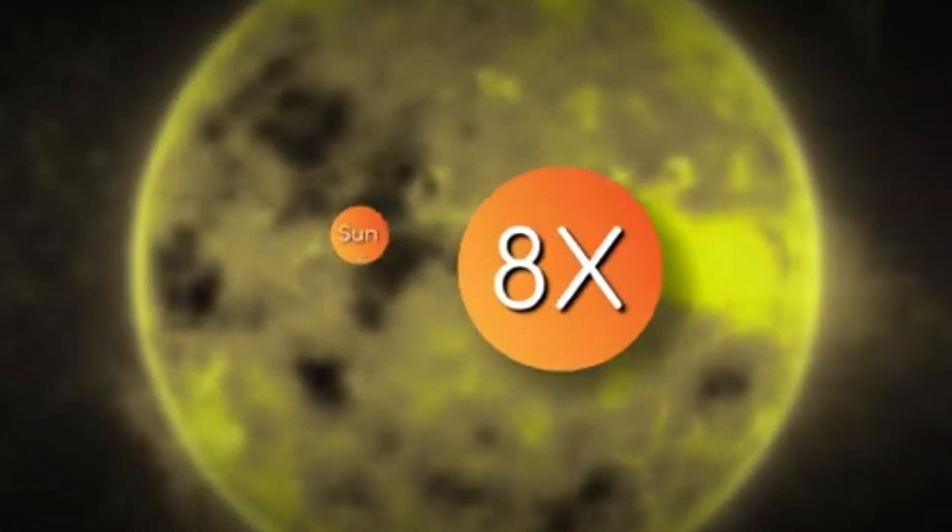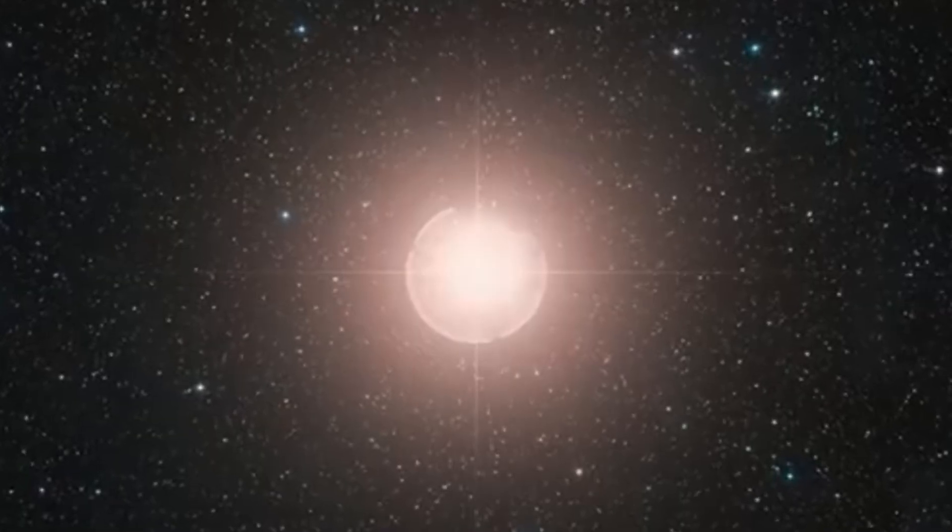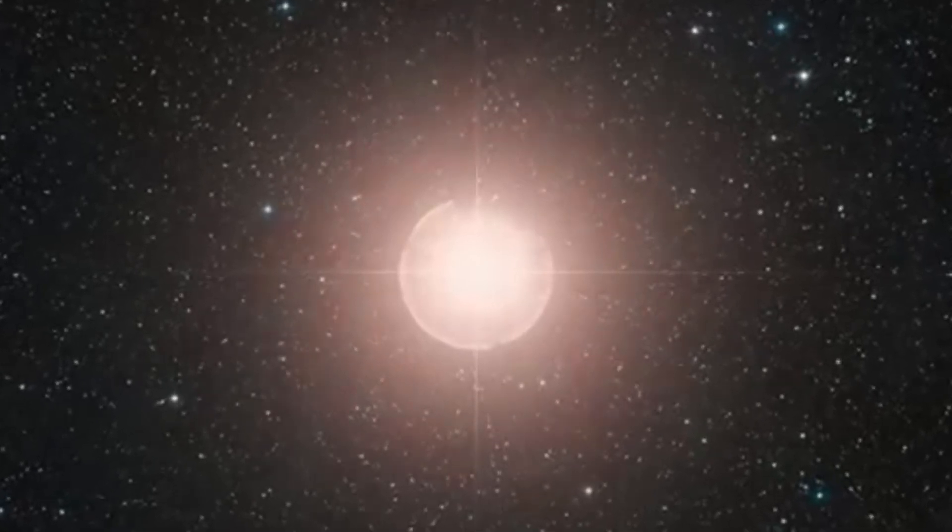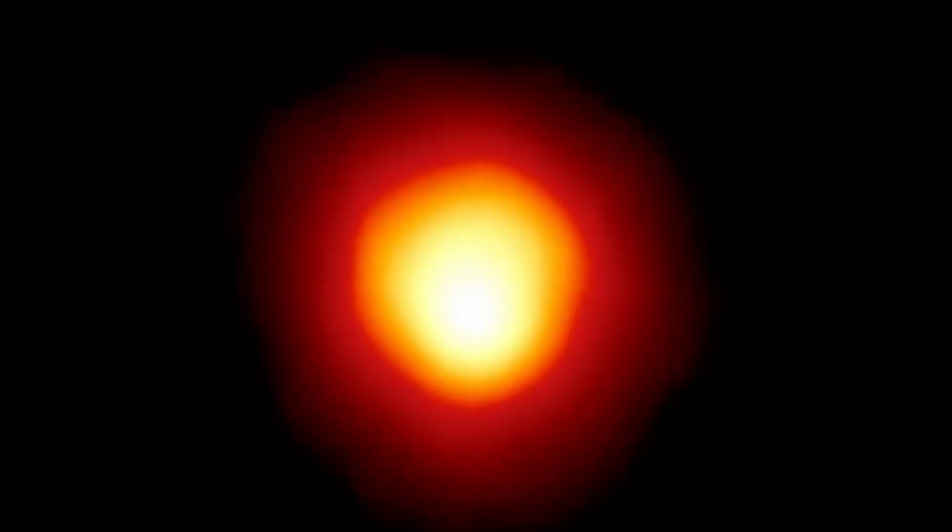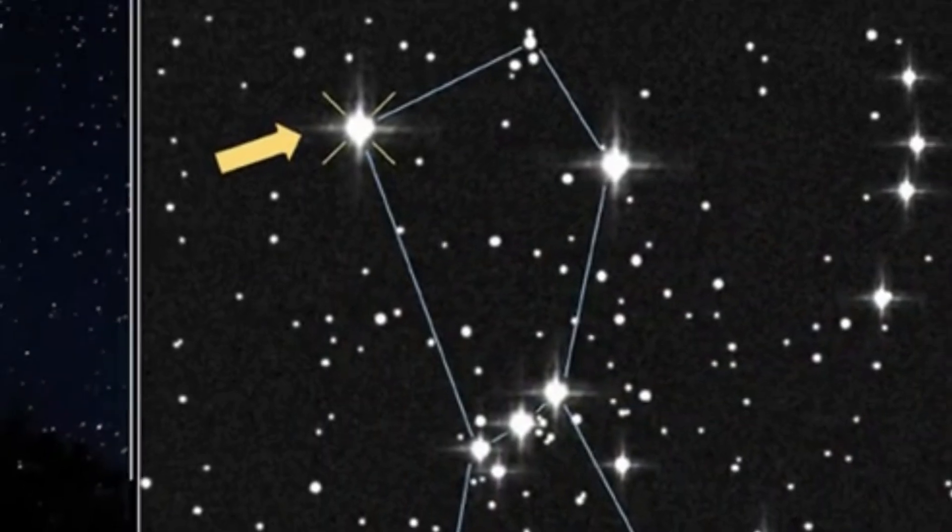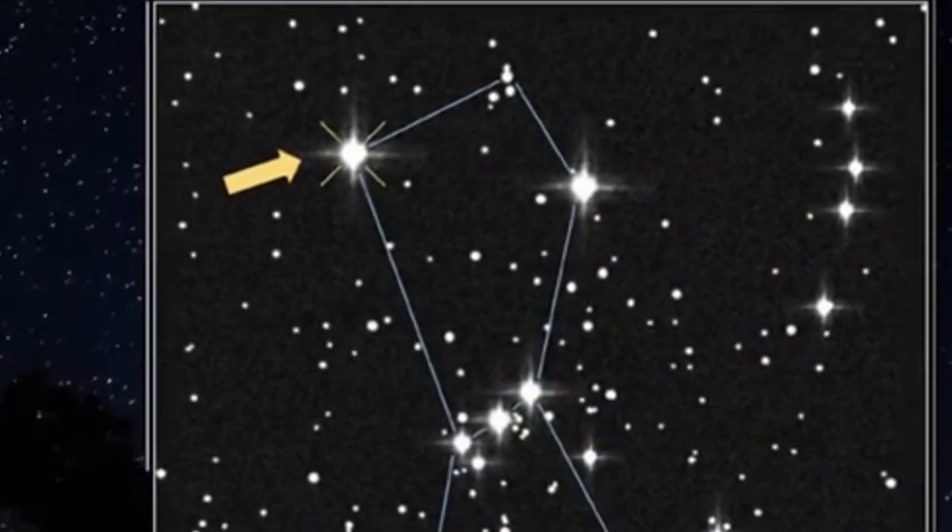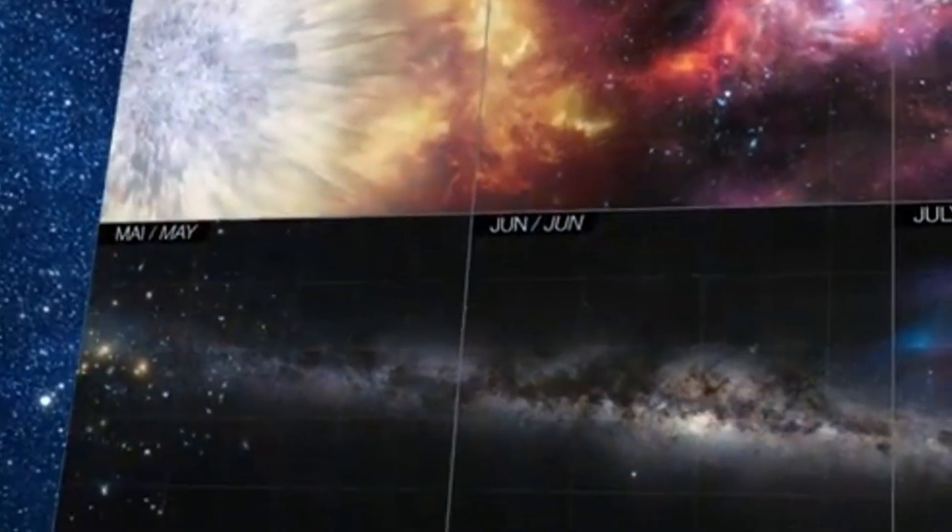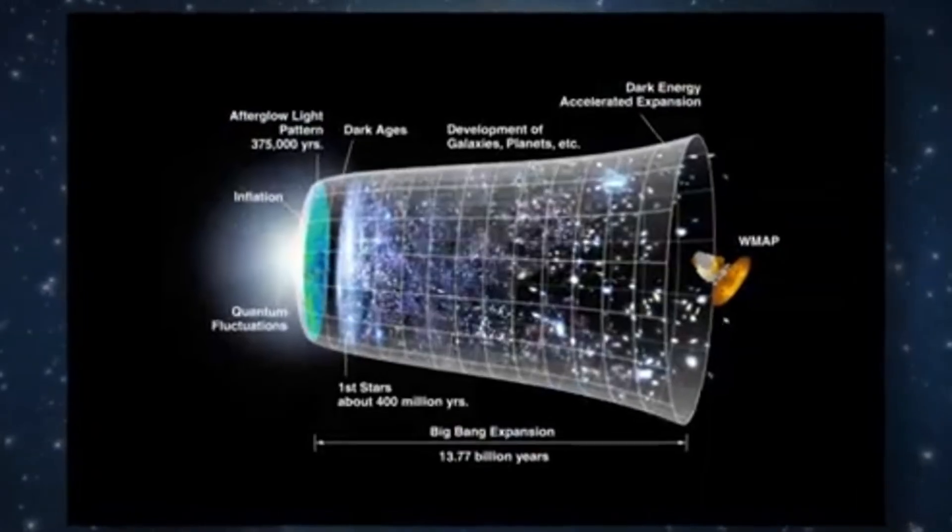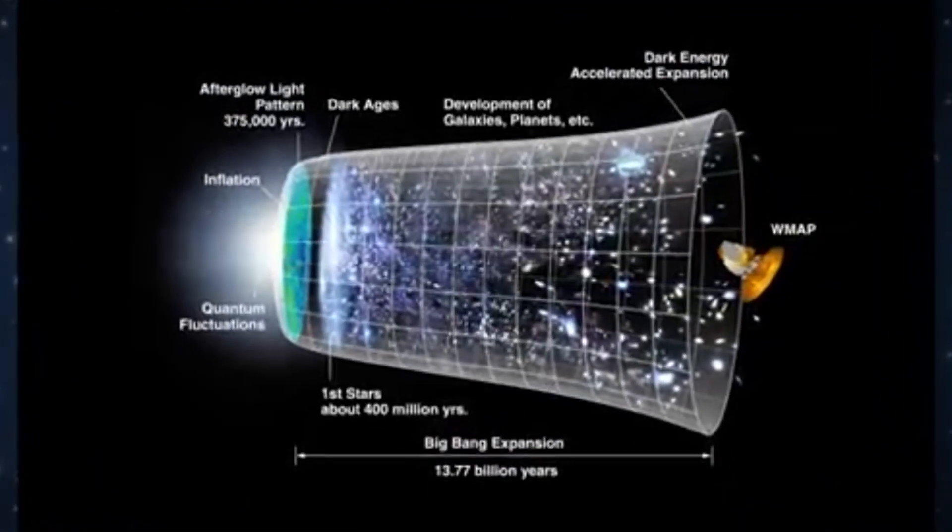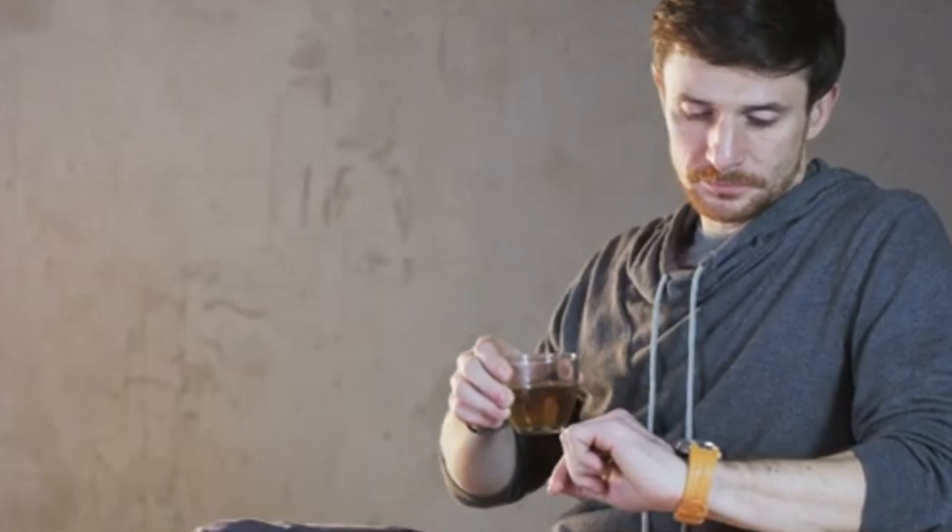A star such as our sun will spend about 10 billion years fusing hydrogen in its core. As it ages, it will eventually run out of hydrogen, transitioning to fuse heavier elements. This process will cause it to expand into a red giant, possibly engulfing nearby planets such as Mercury, Venus, and even Earth. Eventually, it will shed its outer layers, leaving behind a glowing cloud of gas known as a nebula.